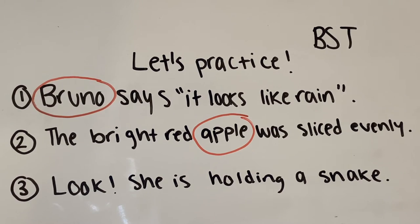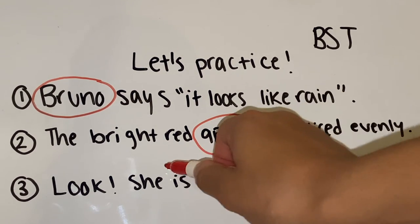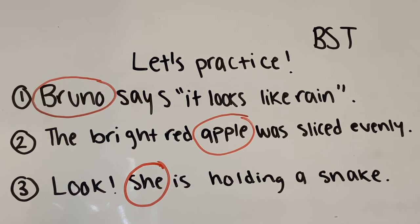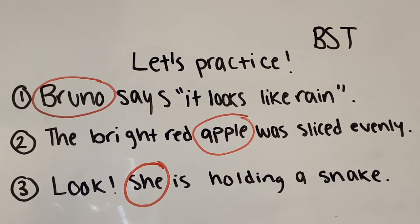In sentence three, the subject is she. It is an unknown person — we only have a pronoun to go off of. We know that she is the subject because of the verb that we have: is holding. She is holding a snake. The subject is she because the action being performed is to hold a snake, and who is holding the snake? She is.